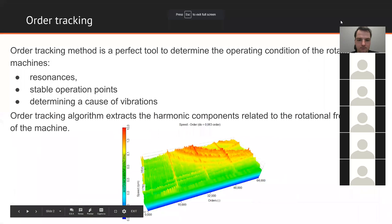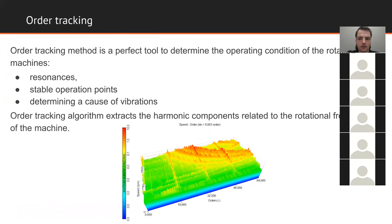Order tracking is a perfect tool to determine the operating conditions of rotating machines — like resonances, stable operating points, and determining the cause of vibrations. It's extremely powerful in combination with other math modules like torsional, combustion, or power analysis. We use the order tracking method to extract the harmonic components related to the rotational frequency of the machine by transforming a measured signal from the time domain to the angular or order domain.